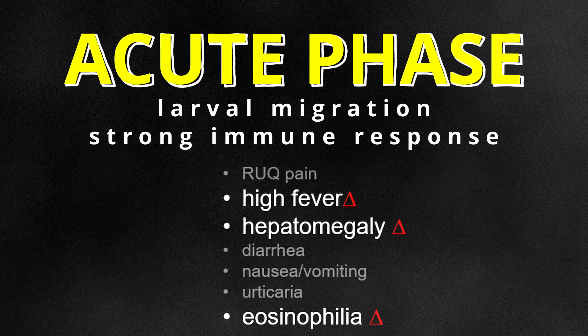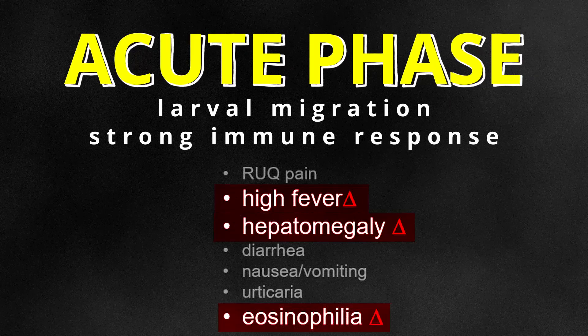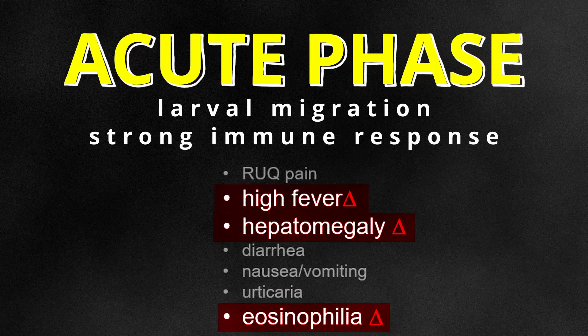The triad of high fever, hepatomegaly, and eosinophilia is diagnostically significant in the acute phase of fascioliasis detection.